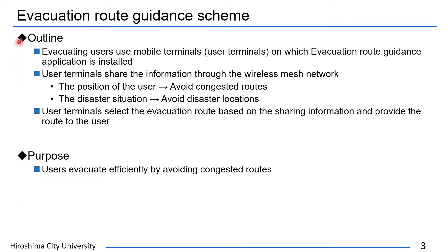First, I'll explain about the evacuation route guidance scheme. We assume that users have mobile terminals installing the evacuation system. User terminals can share the position of the users and the disaster situation among users through the wireless mesh networks.